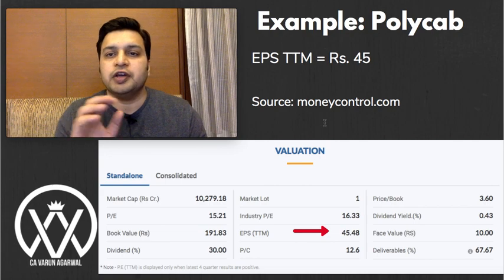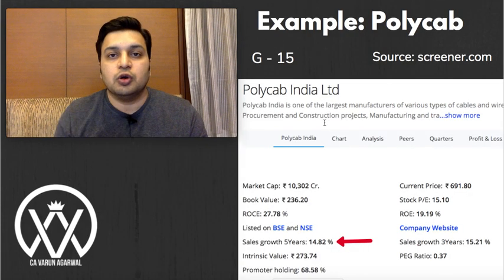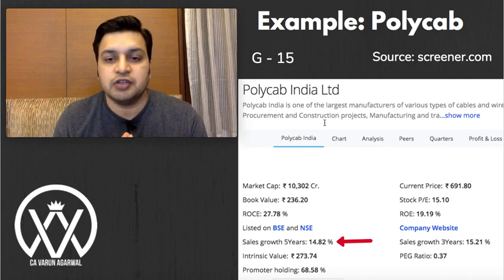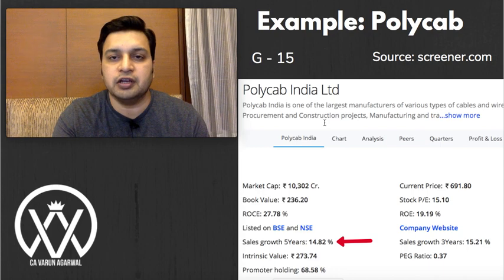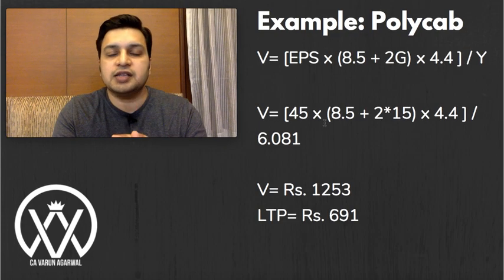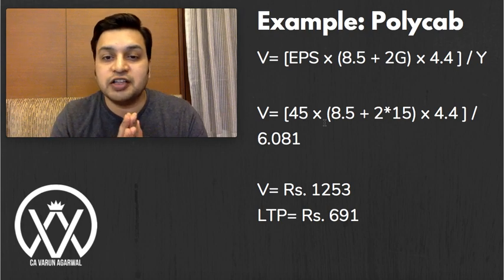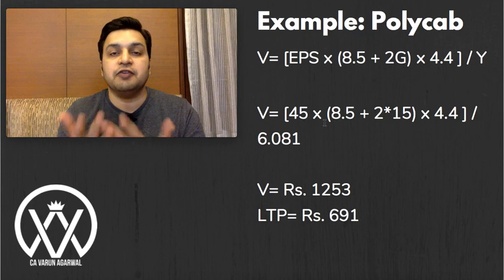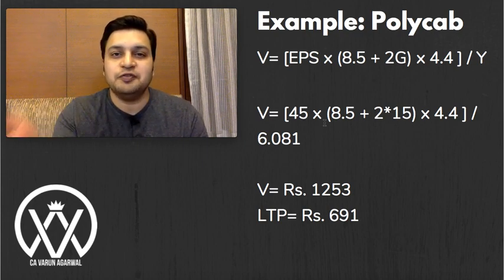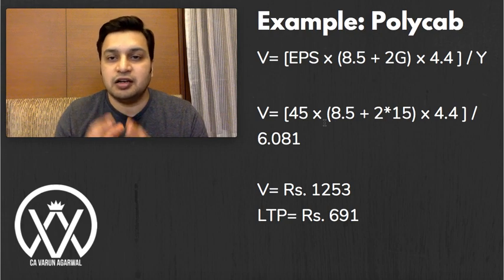Let us take another example — the very popular company Polycab. The trailing 12-month EPS from MoneyControl is around 45 rupees. The five-year average growth rate from screener is about 15%, so G = 15. Bond yield remains 6.081. Putting these three numbers into the formula and dividing by 6.081, you get the intrinsic value of Polycab as 1,253 rupees. The last traded price is around 609 rupees — so you have found a company trading below its intrinsic value, which is a good investment candidate.